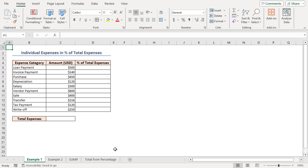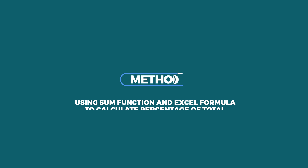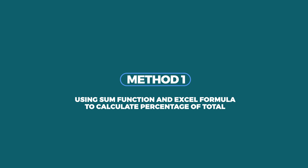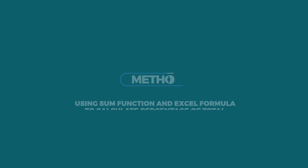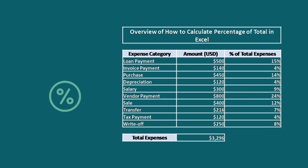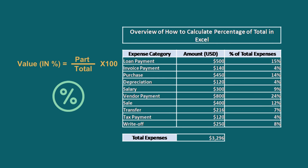For this tutorial I'll be using Microsoft Excel 365. You can calculate the percentage of a part by dividing it by the total value and then multiplying the result by 100. We denote the percentage value with the percentage symbol.